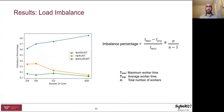To measure load imbalance, we used a metric called imbalance percentage, initially introduced by Cray. The imbalance percentage measures the percentage of load imbalance between parallel workers for an application — the lower the imbalance percentage, the better the load balance. Spark BLAST suffered the highest imbalance percentage, which increased with the number of cores. Sparkle BLAST and MPI BLAST incurred a small imbalance percentage of less than 20% for 1,000 cores, and for smaller numbers of cores, Sparkle BLAST was more load balanced.